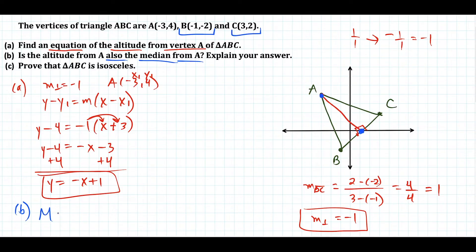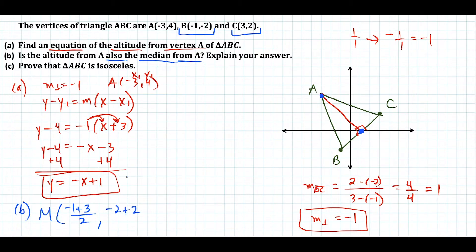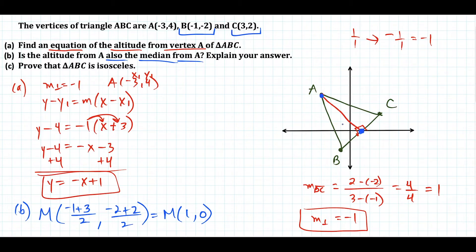To find the midpoint, we add the x-coordinates together: negative 1 plus 3, dividing by 2. The y-coordinate is the sum of the y-values: negative 2 plus 2, dividing by 2. Simplifying, we have 2 divided by 2 equals 1, and 0 divided by 2 equals 0. So the midpoint is 1, 0, which is supported by the graph.